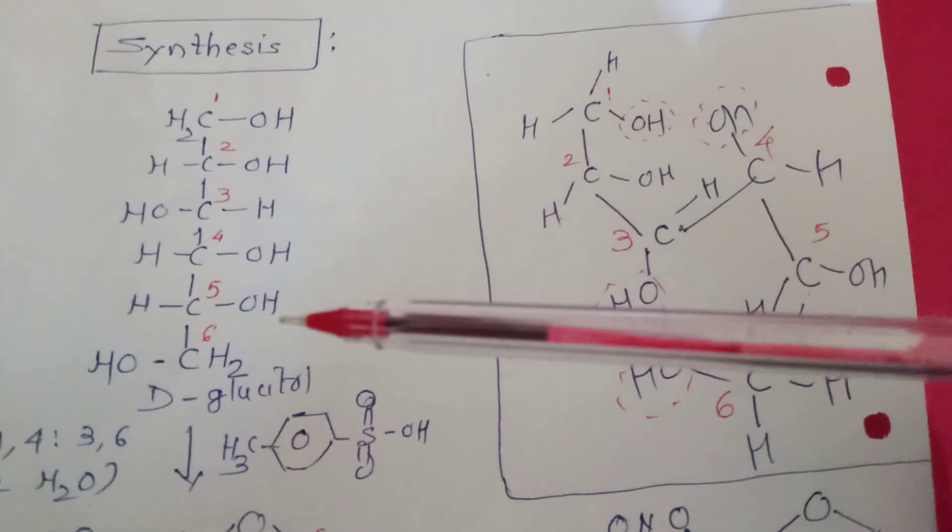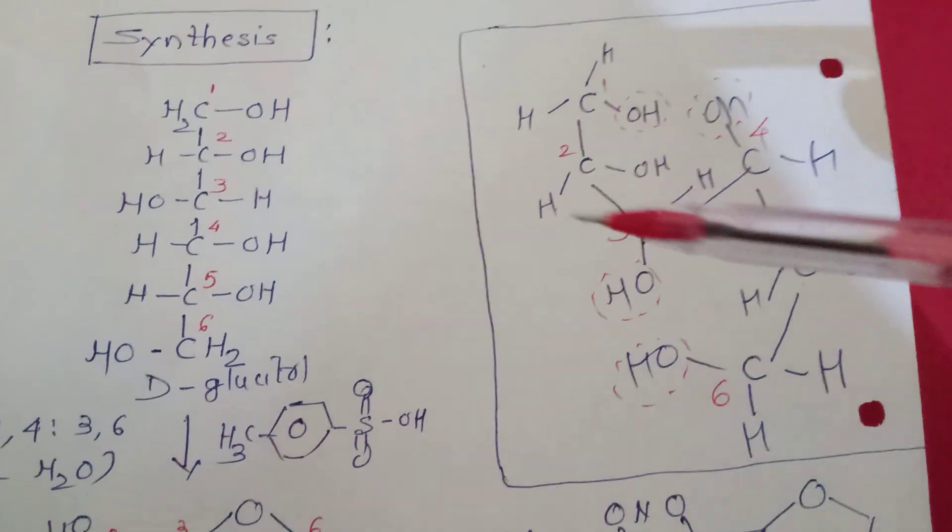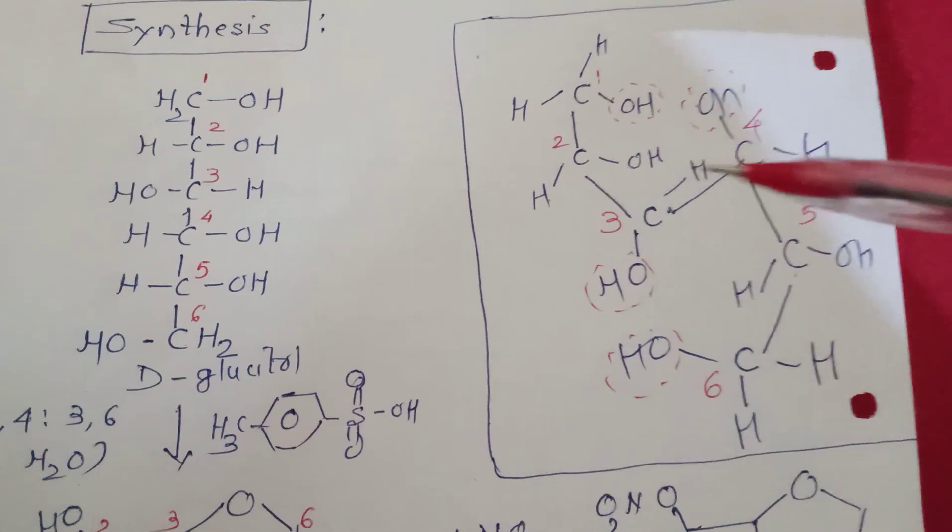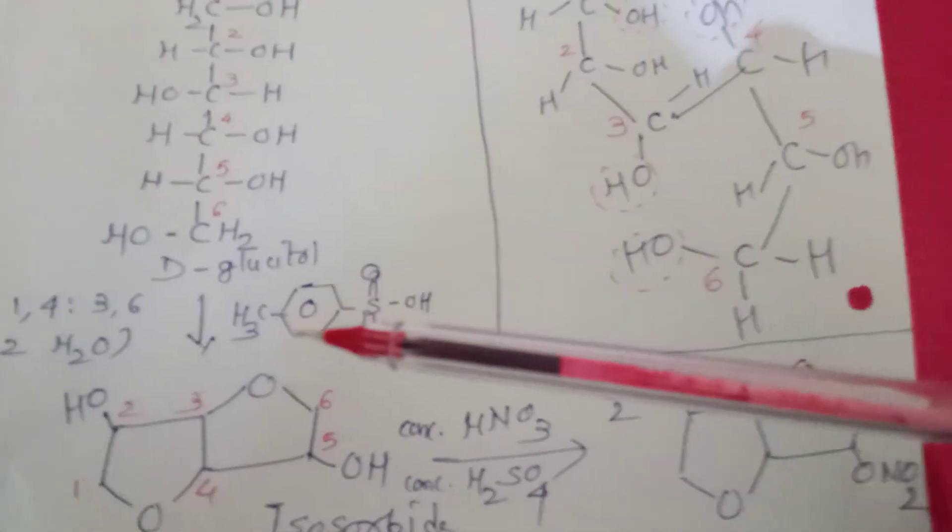Here is the two-dimensional structure. Here is the three-dimensional structure. The D-glucitol reacts with para-toluenesulfonic acid.